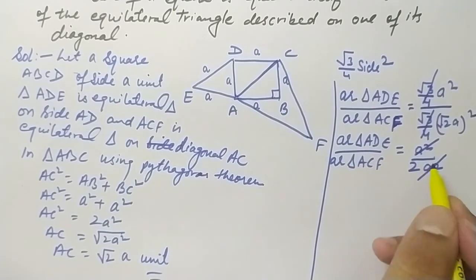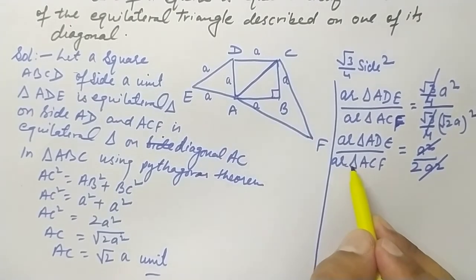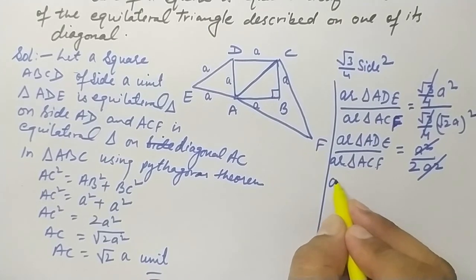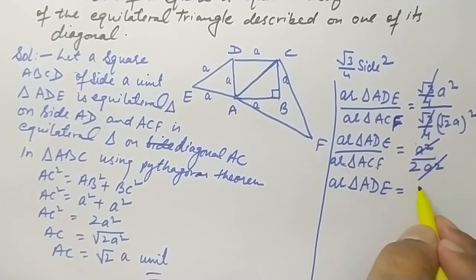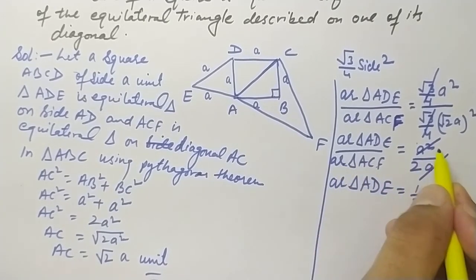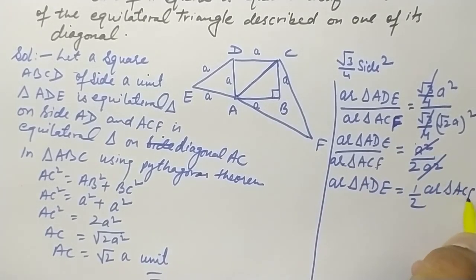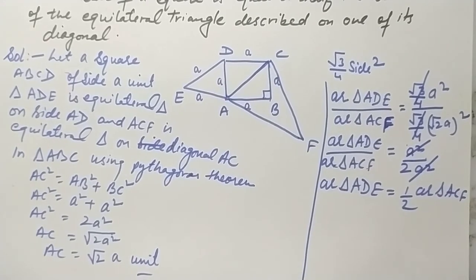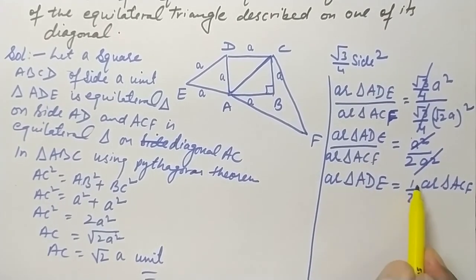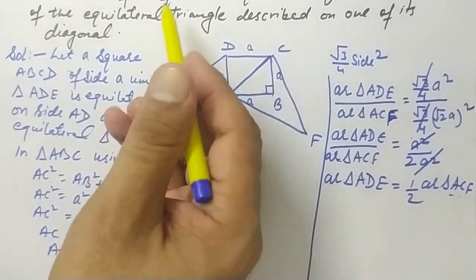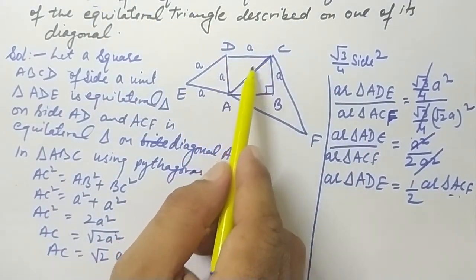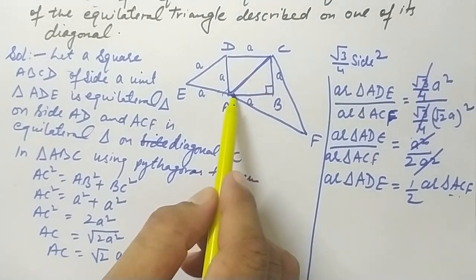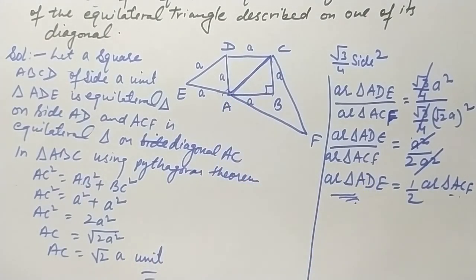Cross-multiplying: Area of triangle ADE = (1/2) × Area of triangle ACF. This shows that the area of triangle ADE is half the area of triangle ACF — which is exactly what the question asked us to prove. Hence proved. Thanks for watching.